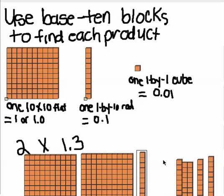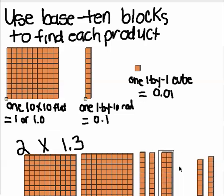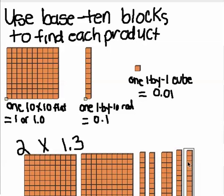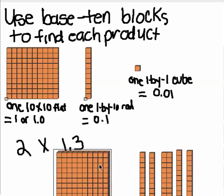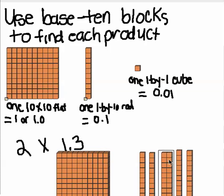So, 2 times 1.3 is 2 point 1, 2, 3, 4, 5, 6. 2.6 is our answer.